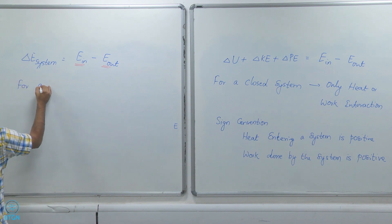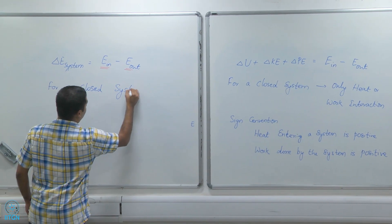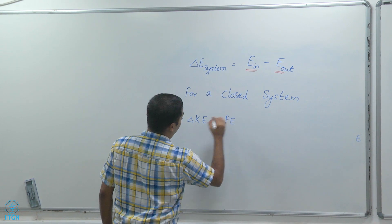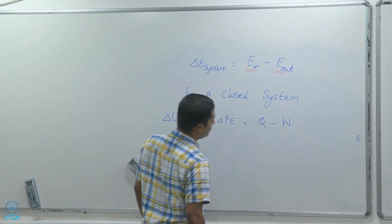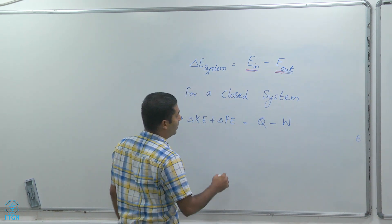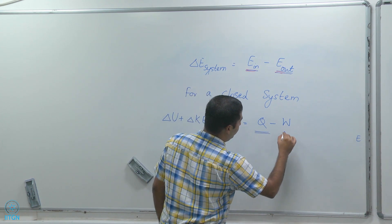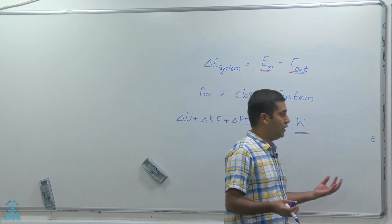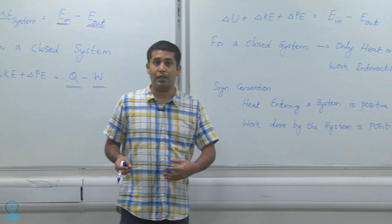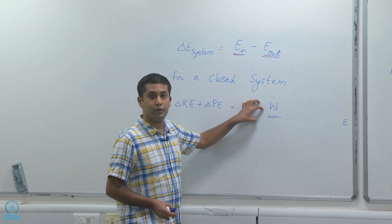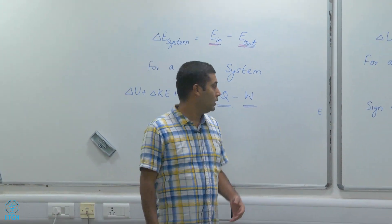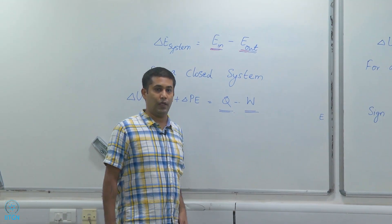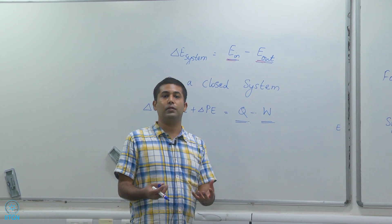For a closed system, I can write delta U plus delta KE plus delta PE equals Q minus W. This is because energy entering and energy leaving — remembering that Q entering is positive and work done by the system is positive — gives us Q minus W. If heat is leaving the system, Q becomes negative; if work is done on the system, W becomes negative.